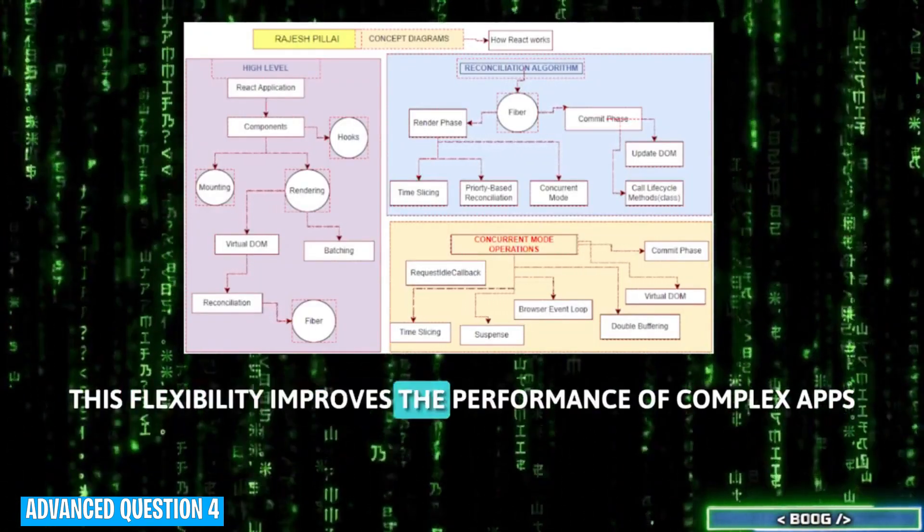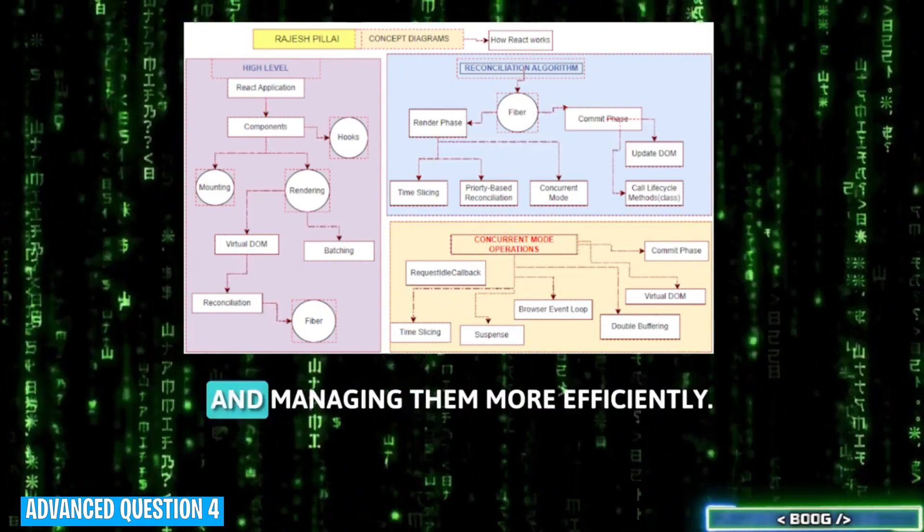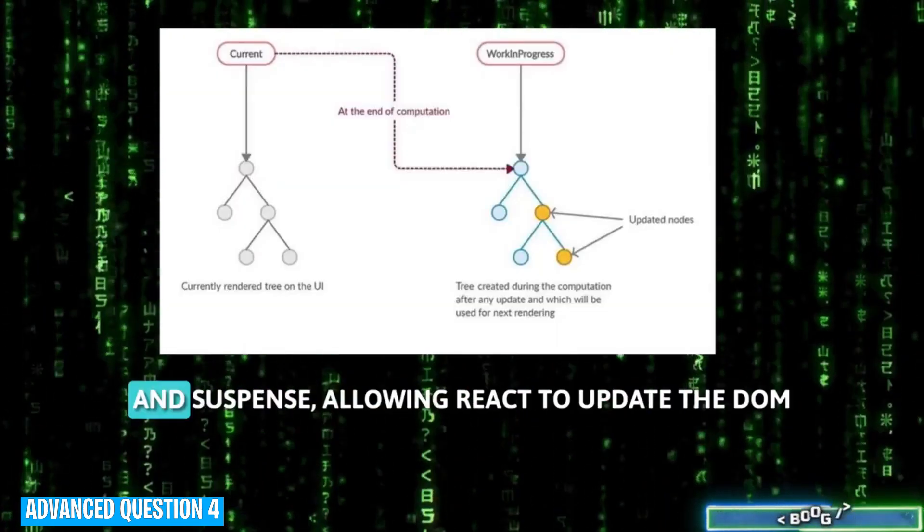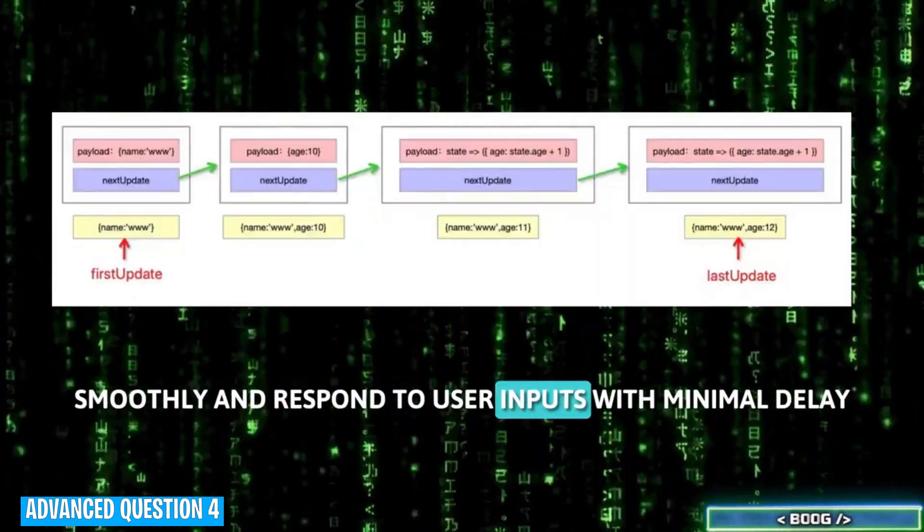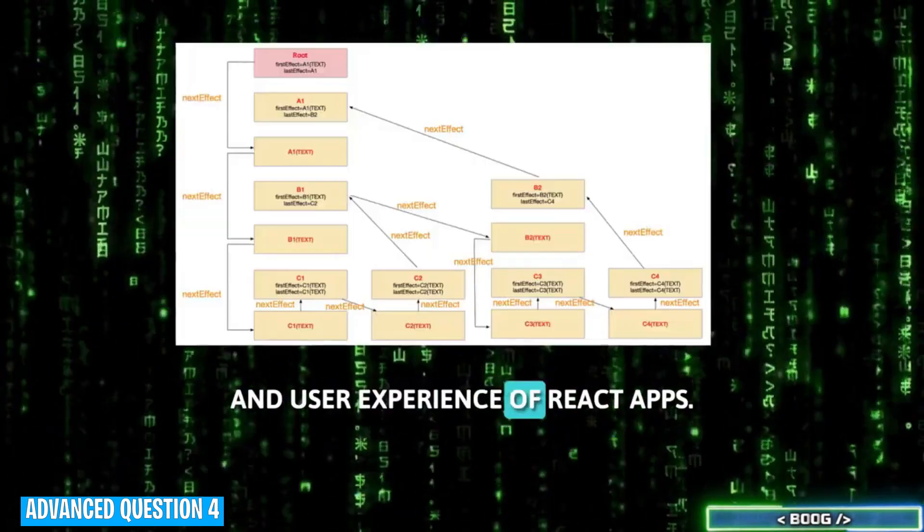This flexibility improves the performance of complex apps by breaking up rendering work into small chunks and managing them more efficiently. Fiber supports features like concurrent mode and suspense, allowing React to update the DOM smoothly and respond to user inputs with minimal delay, enhancing both the performance and user experience of React apps.